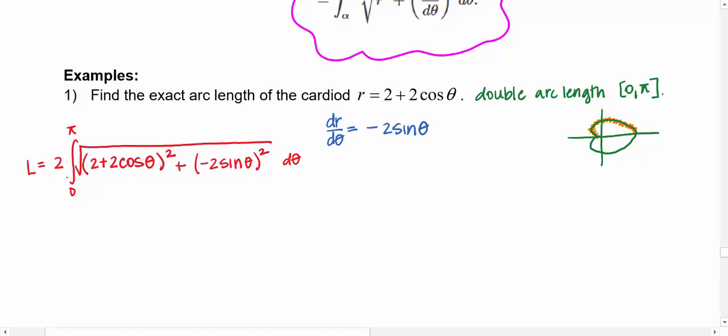So I will square out these terms to see what we are dealing with. So I have 4 plus, if I multiply those together, I get 4 cosine theta and then double it. So 8 cosine theta and 4 cosine squared theta plus 4 sine squared theta.